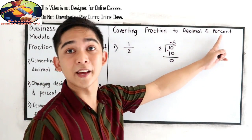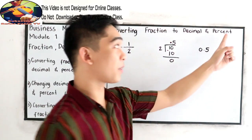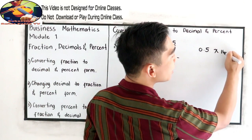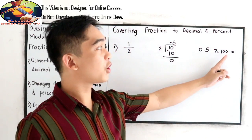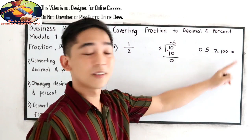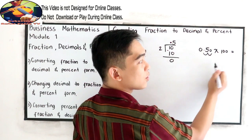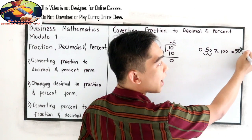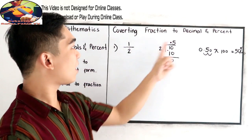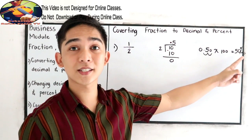Now we're going to write it into percent. So we have 0.5, and to write in percent, we multiply by 100. The shortcut is: count the number of zeros in 100 — there are two zeros — then move the decimal point 2 units to the right. So we get 50. Don't forget to write the percent sign. The decimal equivalent of 1/2 is 0.5 and the percent form is 50%.